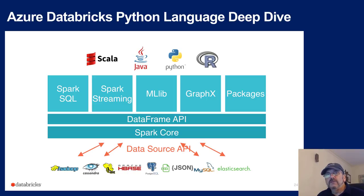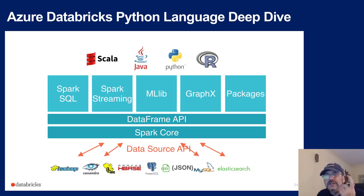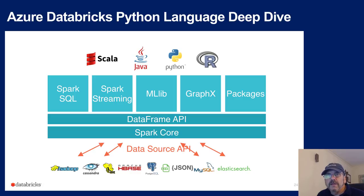Previously we had to use Resilient Distributed Datasets as our API in Spark, whether using Python or not. But now we can use something very similar to Pandas DataFrames. It uses the same syntax in most cases, but actually it's scaled out — the DataFrame is spread across any number of machines. In Databricks you can install libraries via the library feature if you need anything not already available, like custom packages from PyPI.